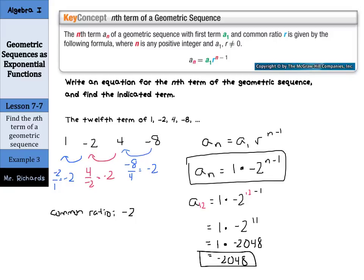To write an equation, we need to find the common ratio first, and that goes in for r. Our first term is just our first term. Sometimes it's 1, sometimes it's not. If we're looking for the twelfth term or the hundredth term, we put that in for n, subtract 1, do our power, multiply by that first term, and you'll get your answer.